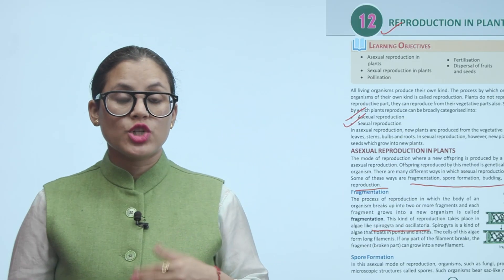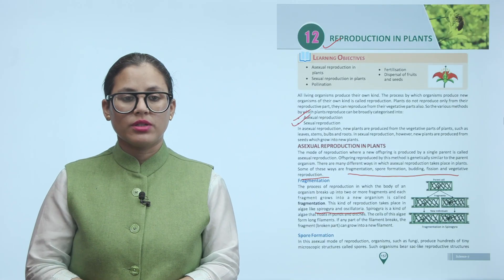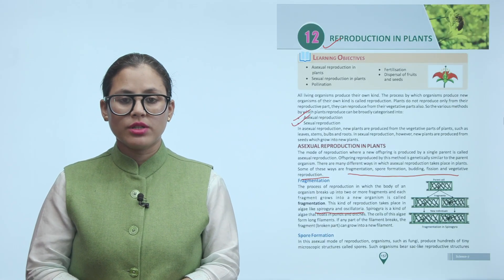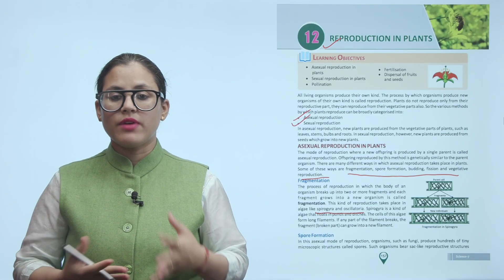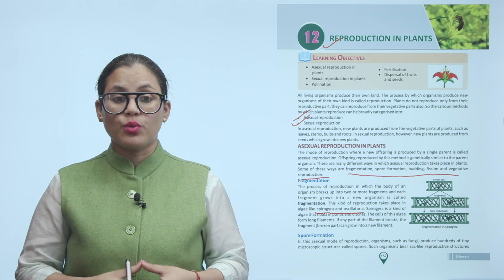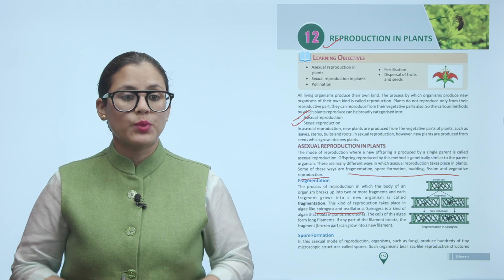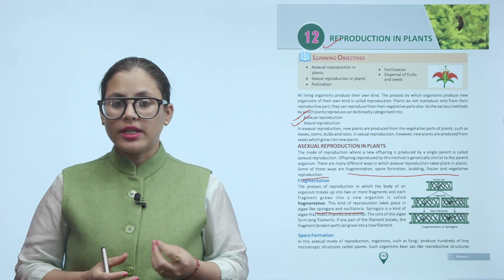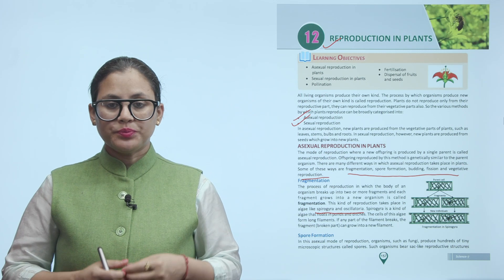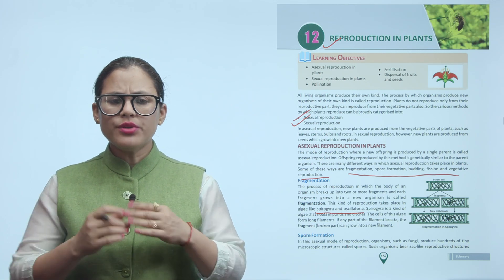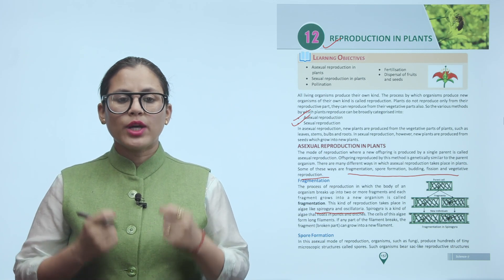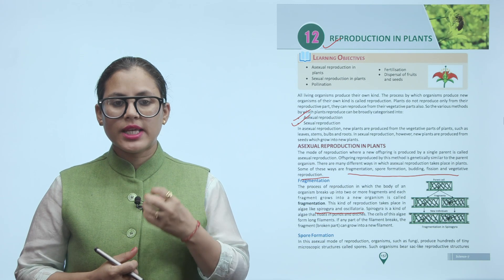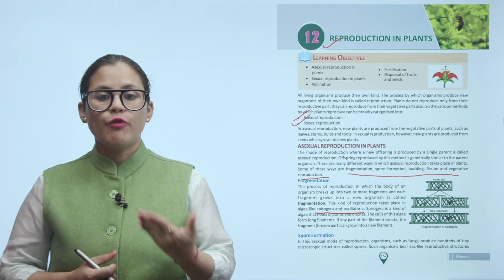Spore formation is the asexual mode of reproduction in large-scale organisms such as fungi, which produce hundreds of tiny microscopic structures called spores. What happens is that fungi produce hundreds of tiny microscopic structures which are called spores.